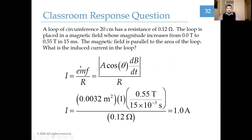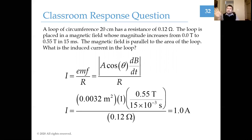To finish the calculation: current equals EMF over resistance by Ohm's law. The area is πr² in SI units. The magnetic field is parallel to the area vector, so the angle is zero and cosine is one. The change in field is 0.55 tesla over a change in time of 15 milliseconds, converted to 15 × 10⁻³ seconds. Plugging in the loop's resistance, the current works out to a clean value of 1 amp.